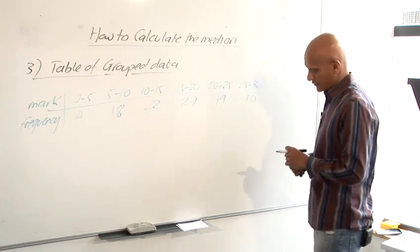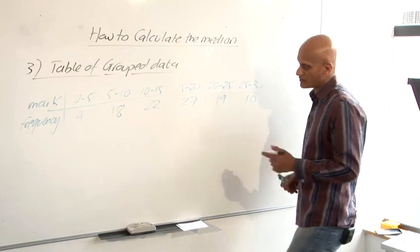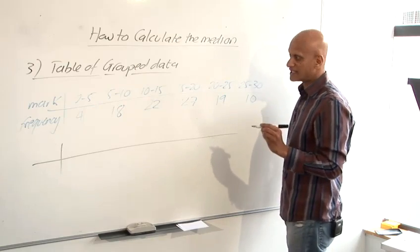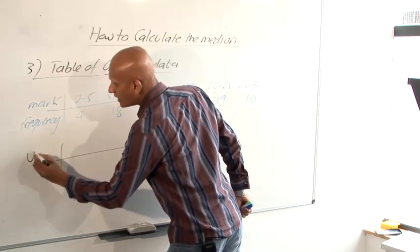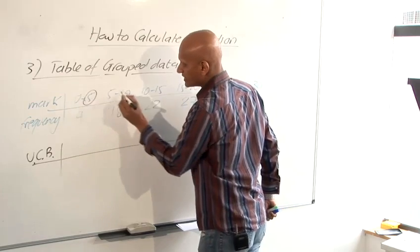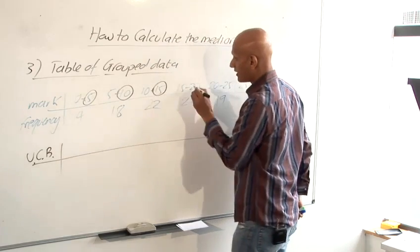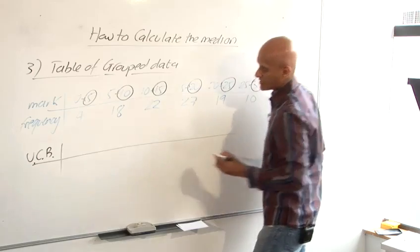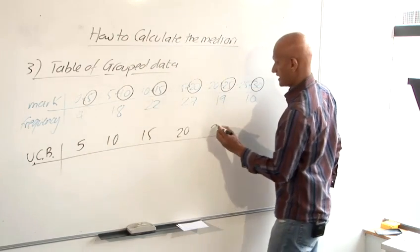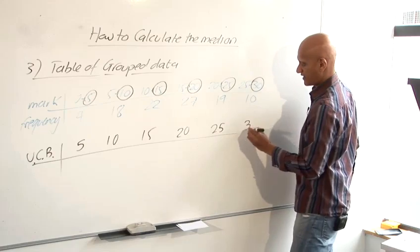And the way we do that, first of all, is we have to change it to a cumulative frequency table. Now on the top, it's slightly different this time. It's the upper class boundary. So it's the top number of each of these classes that we want. The upper class boundary. So that's 5, 10, 15, 20, 25 and 30.